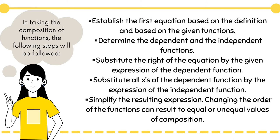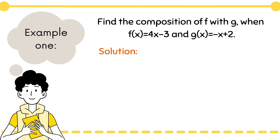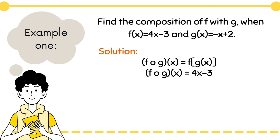Now let us apply these steps and find the composition of the following functions. Example number one: find the composition of f with g when f(x) = 4x − 3 and g(x) = −x + 2. So we write down f of g of x, and we write down our dependent function which is f(x) = 4x − 3.